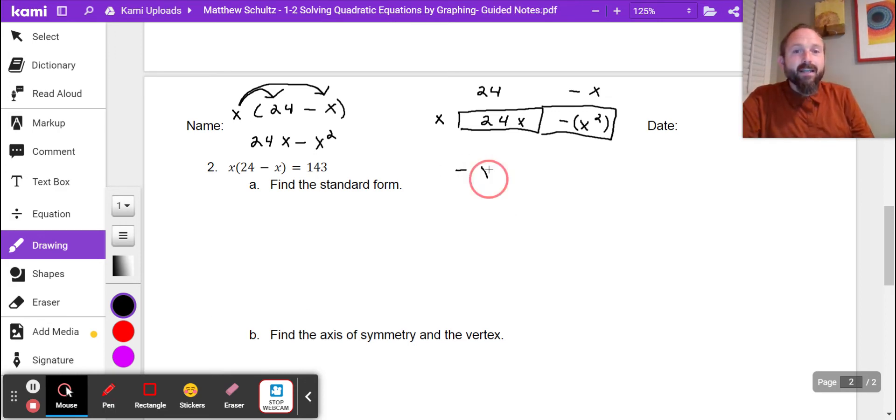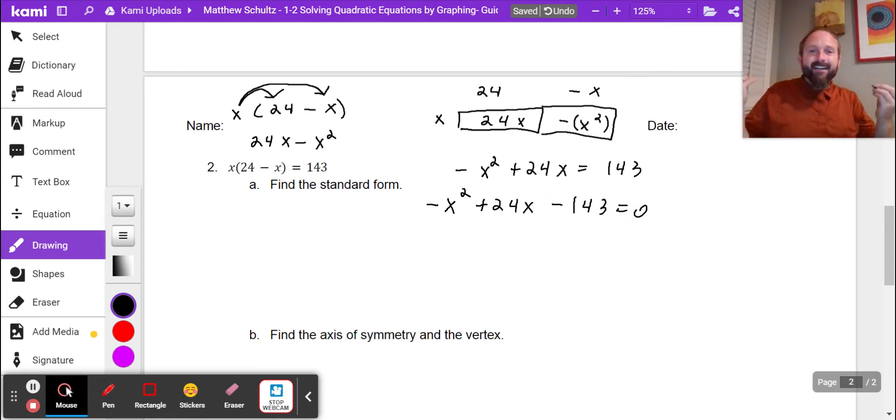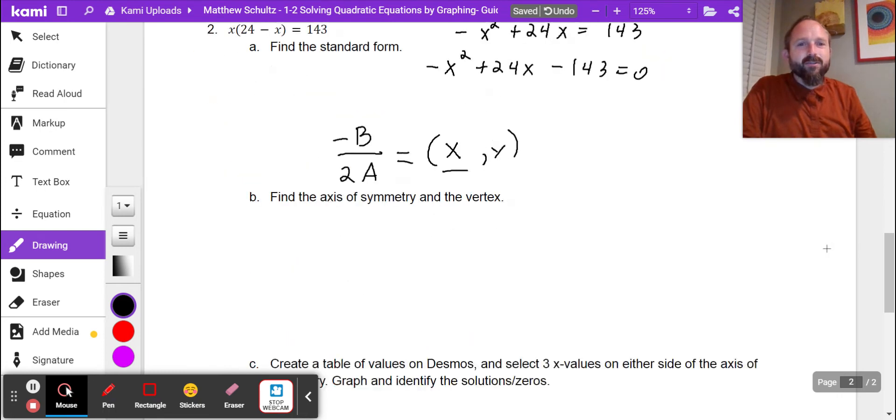Let's take that and put it in standard form. We have negative x squared plus 24x equals 143. Well I need to move this over here, so I'm going to subtract by 143 on both sides. And so I get the following as my standard form of a quadratic. Now we just need to find the axis of symmetry and the vertex. Remember the axis of symmetry is negative b over 2a.